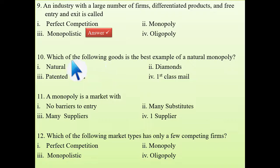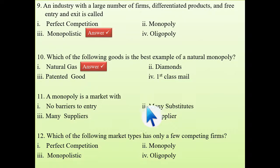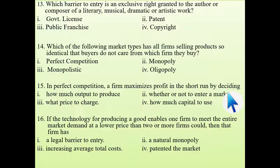Tenth question: which of the following goods is the best example of natural monopoly? The answer is natural gas. Eleventh question: a monopoly is a market with one supplier — yes, the answer is one supplier. Twelfth question: which of the following market types has only a few competing firms? When there are few competing firms, the market is obviously oligopoly.